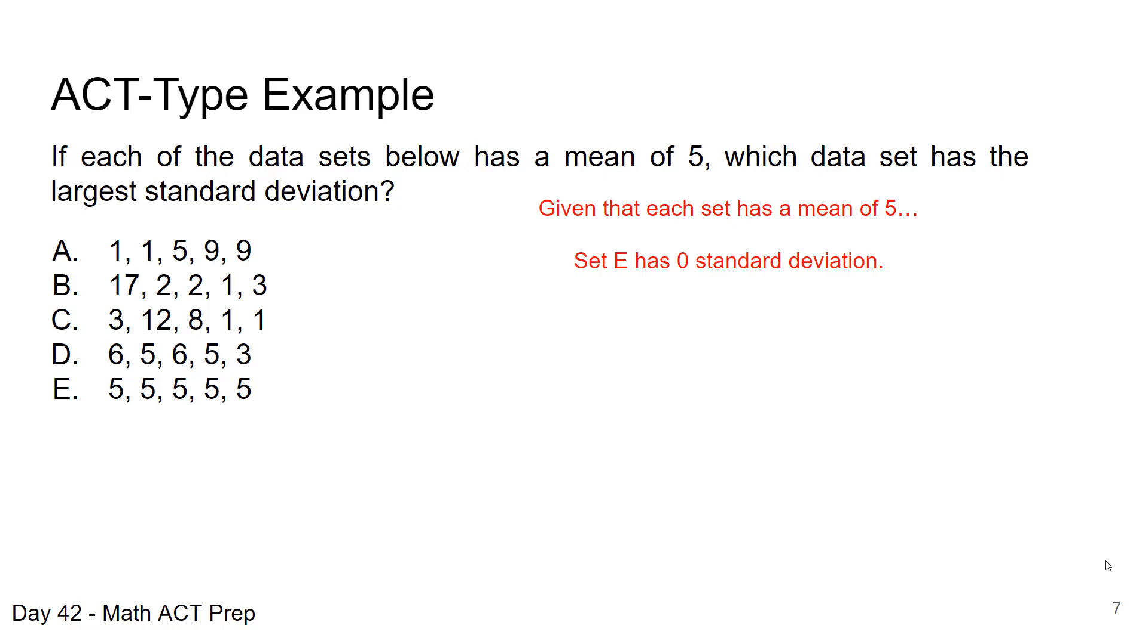So when we subtract each of those terms from the mean, you get 0. So you can eliminate choice E. All the other options are going to have standard deviations greater than 0.